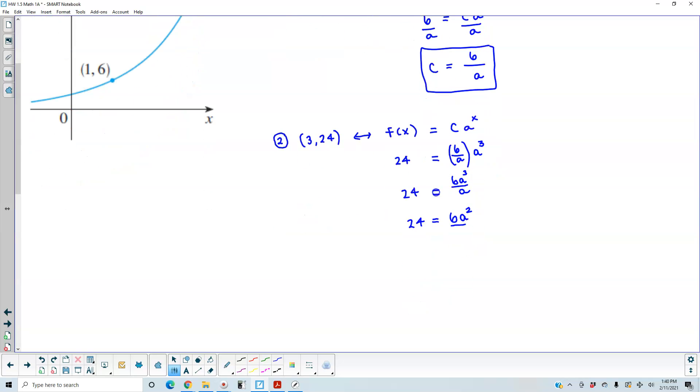Now let's divide both sides by 6. And we get 4, which is equal to a squared. And if we take the square root of both sides, then we know that a is going to equal 2.